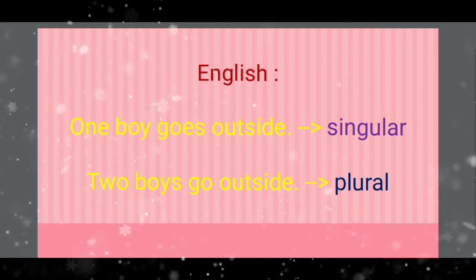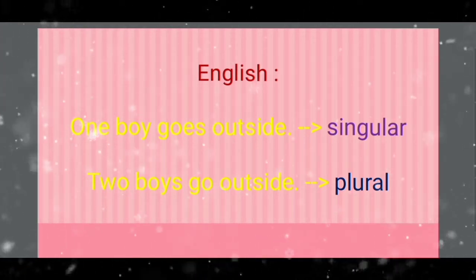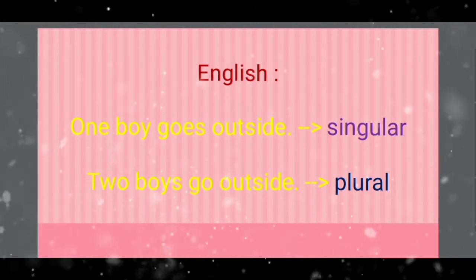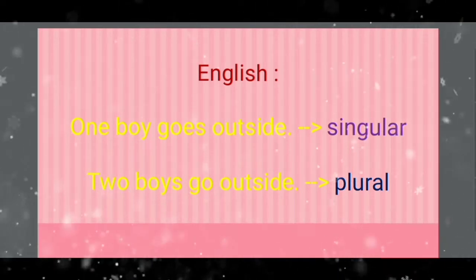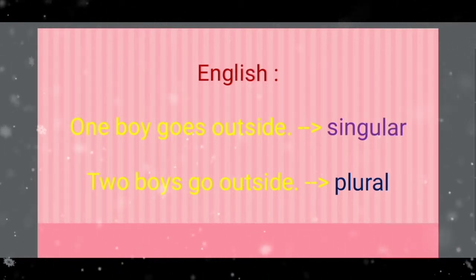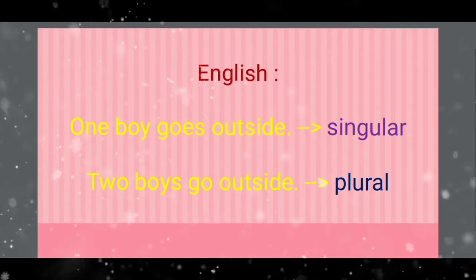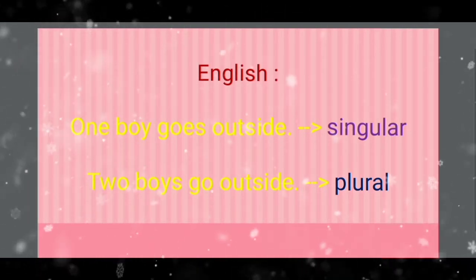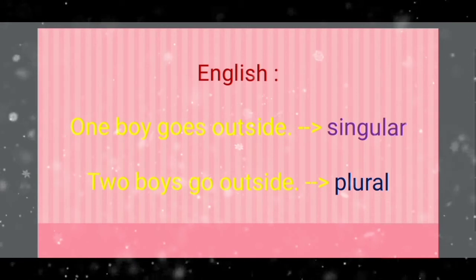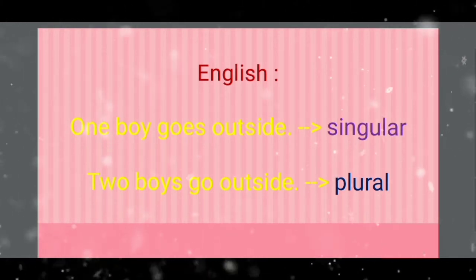The grammatical categories of singular and plural are important ones in English grammar, so important that they are expressed redundantly. Like the example in the video: 'one boy goes outside,' which is singular, and 'two boys go outside,' which is plural. Plurality in these examples is reiterated by the use of a number word, noun suffix, and a specific verbal form. Singular and plural are categories that can hardly be ignored. A speaker of English finds it natural to divide the universe into things that are either singular or plural.